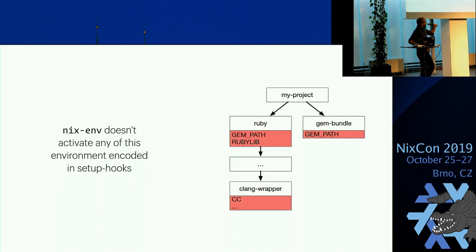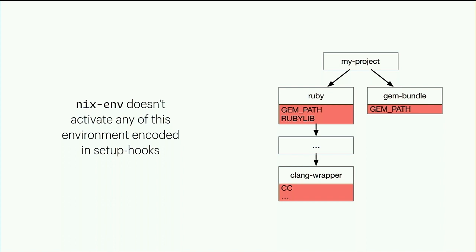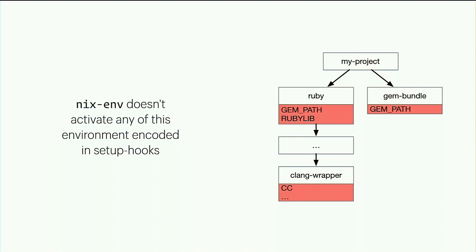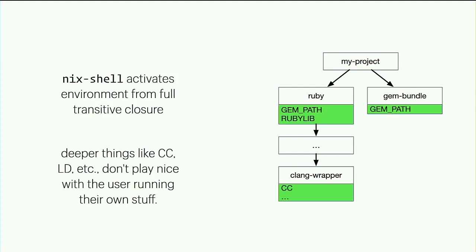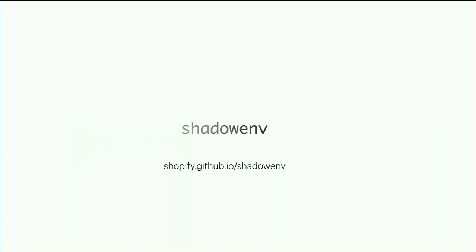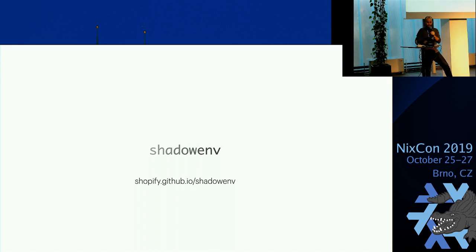Because we're in a situation where our projects don't actually have build phases, we're straddling this boundary where maybe people want to build something that's not in the Nix store. We don't want all those variables. Nix-env doesn't give you any of that environment. Nix-shell activates all of it, but we don't want all of it. What we actually want is just the top-level, which is the first-order dependencies of the profile we build. Maybe this exists and I just don't know about it — I couldn't find anything that does this automatically. So we built a tool called shadow-env, partially motivated by this.